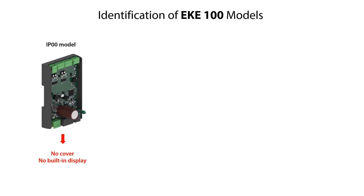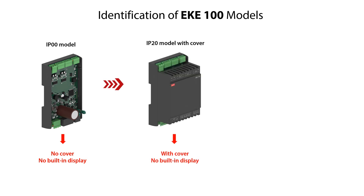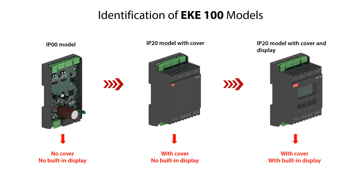Here you see the EKE100 with IP00 rating, which means it has no cover and no built-in display. Here you see the EKE100 with IP20 rating, which means it has no cover and this version is without a built-in display. And here you see the EKE100 with IP20 rating again, with cover but also with a built-in display.